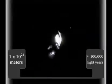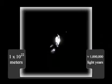At a distance of 10 to the 22 meters from the Sun, or 1 million light years from the Sun, you can see the Milky Way galaxy and its two companions, the Magellanic Clouds.